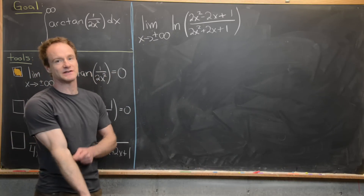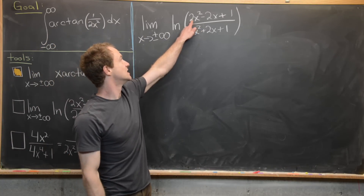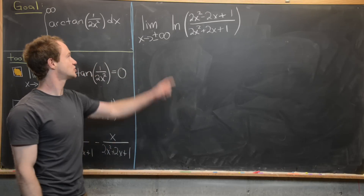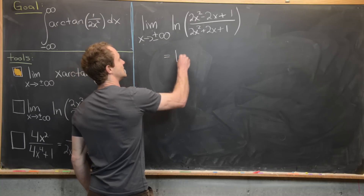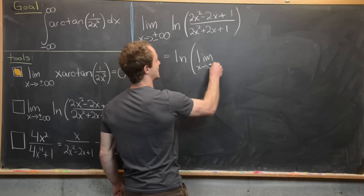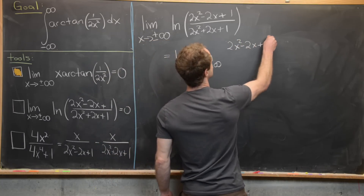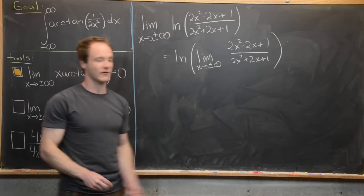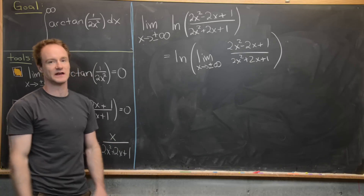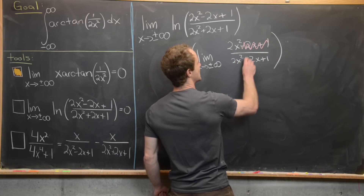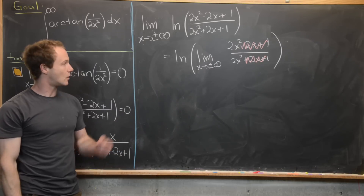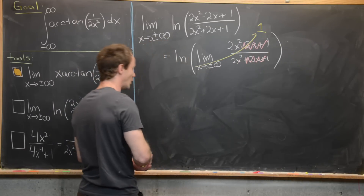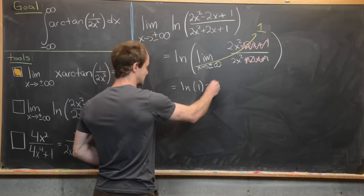Now for the second limit: as x→±∞ of the natural log of (2x²−2x+1)/(2x²+2x+1). Since the natural log is continuous, we bring the limit inside to get ln of the limit of that rational function. Taking the infinite limit of a rational function reduces to the ratio of leading terms: 2x²/2x² = 1, so we get ln(1) = 0.